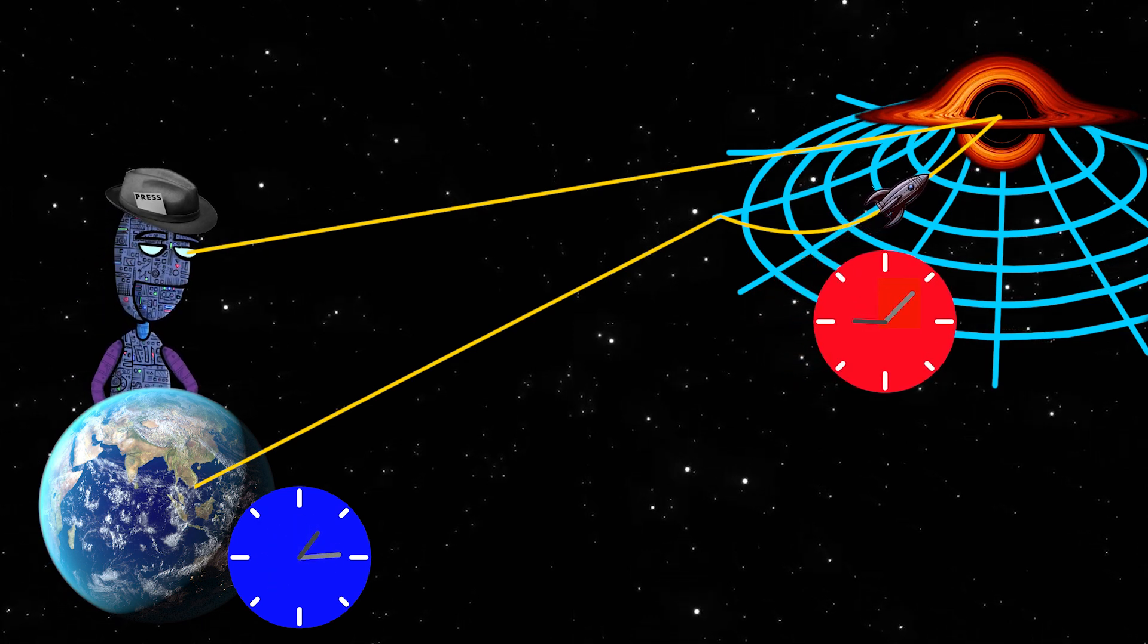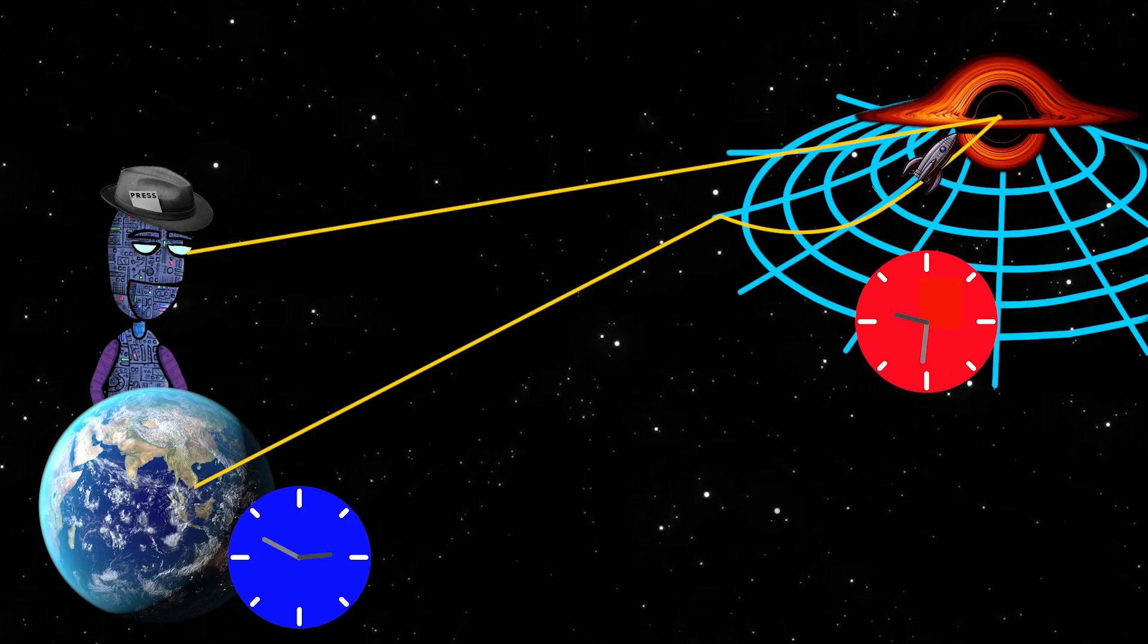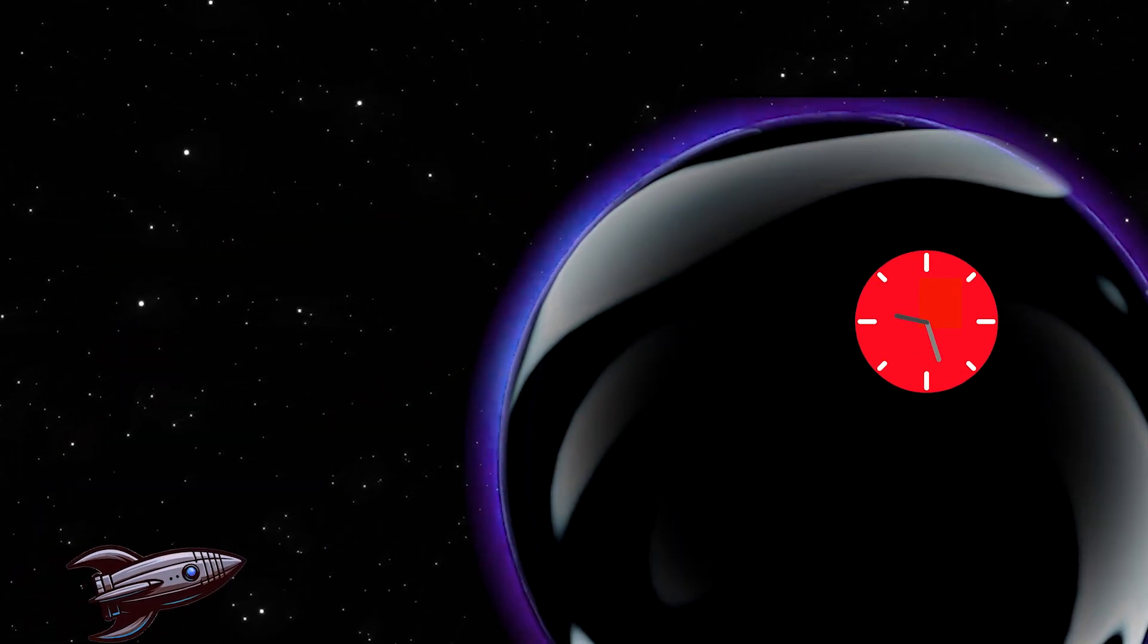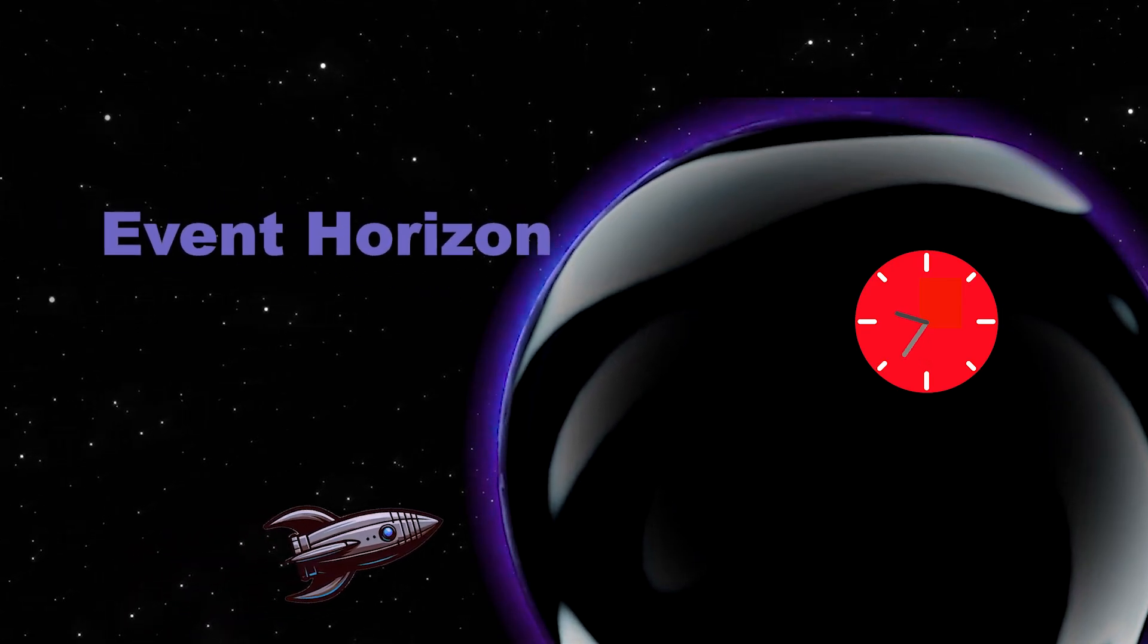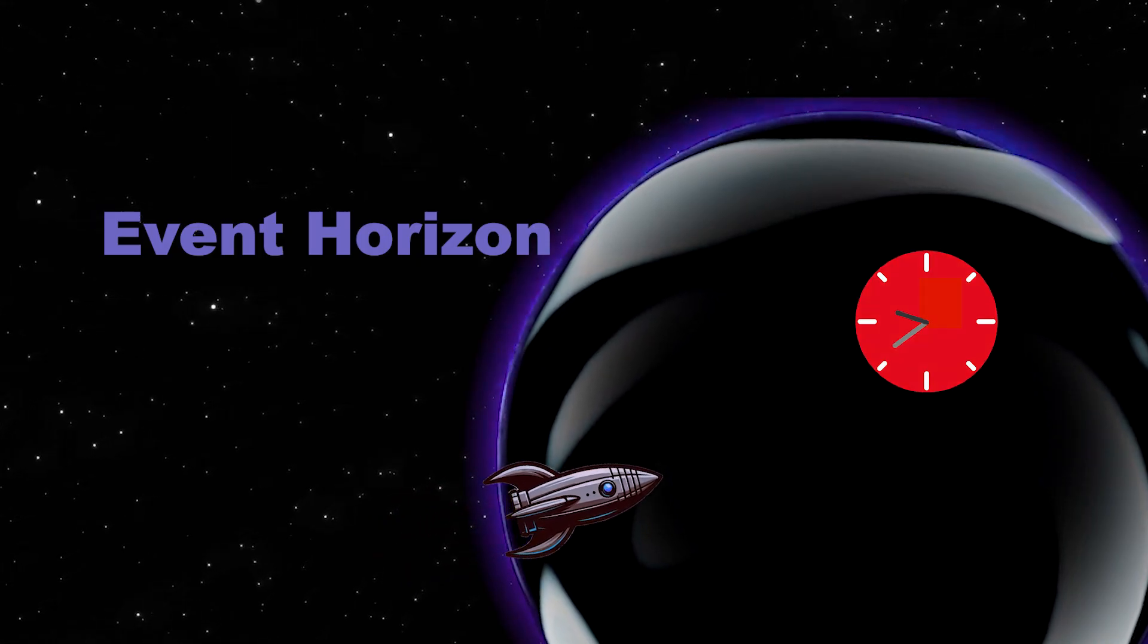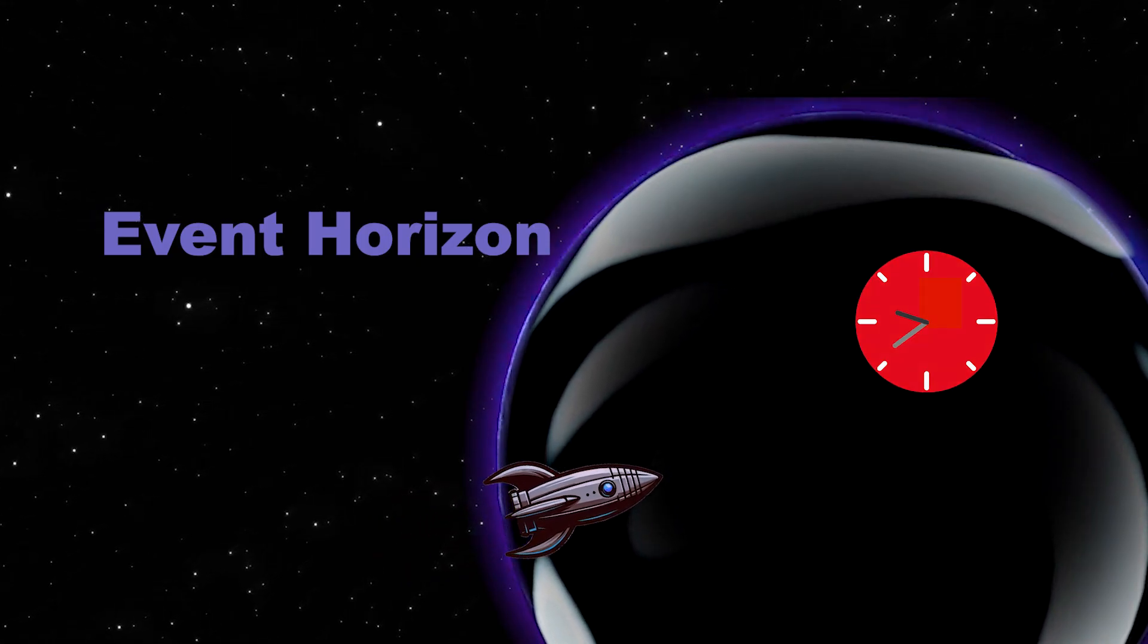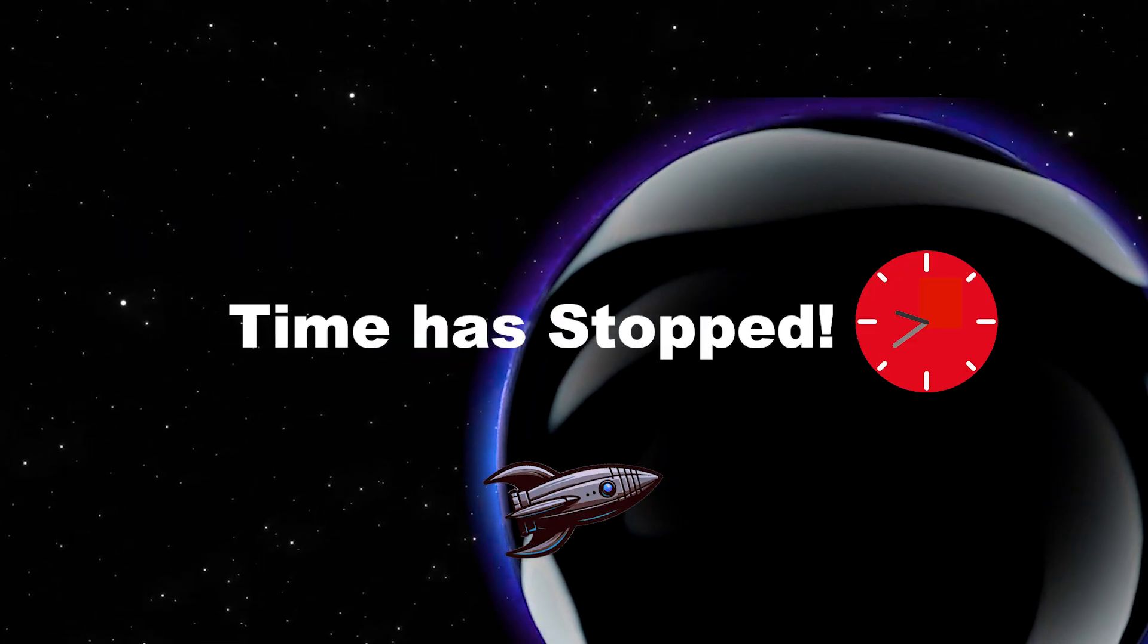The speed of light is constant, so time has slowed down for the astronaut as seen by the reporter. Time keeps getting slower as the astronaut gets closer to the event horizon. The event horizon is a boundary around the black hole beyond which no light or other radiation can escape. Once he reaches the event horizon, the astronaut would appear frozen to the reporter. Time has stopped for him.